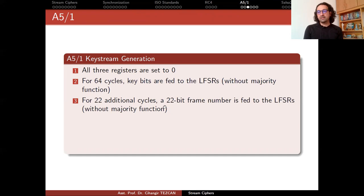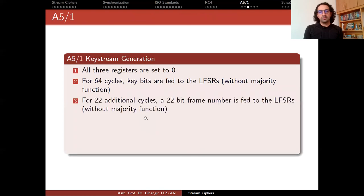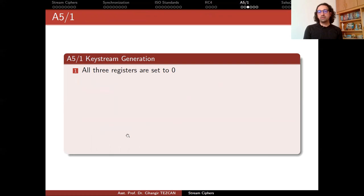For 22 additional cycles, a 22-bit frame number is fed to the LFSRs without majority function. Again, you are feeding these new bits from here. And finally, 100 additional clocks with majority function is performed to obtain the initial state. So you first feed the key bits into the registers, then you feed a 22-bit frame. Then you run the system without producing any output for 100 clocks. But this time, you use the majority function.